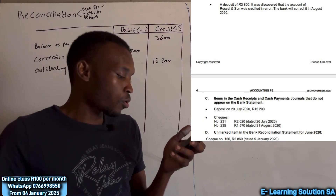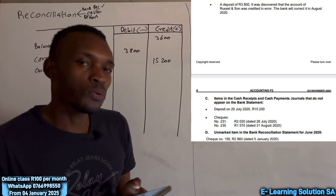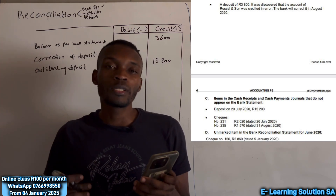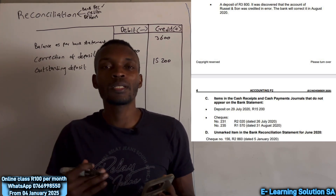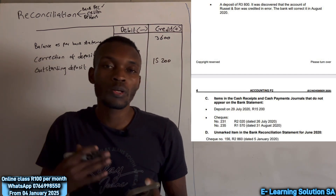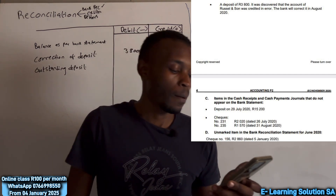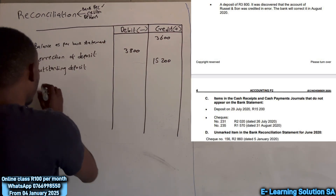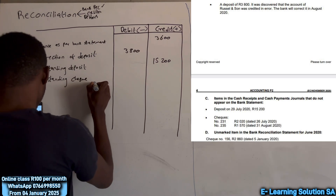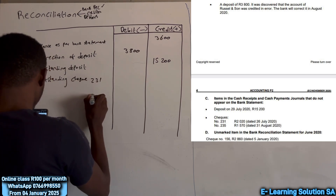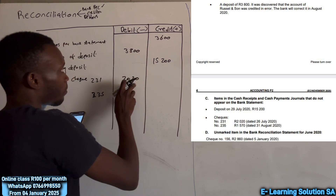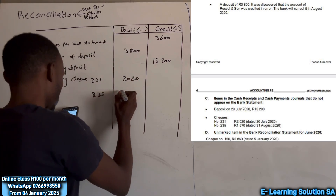Regarding outstanding checks, I want to emphasize the issue of dates. When it comes to outstanding checks that are post-dated, we must record them every month until that date is reached, as long as the check is not older than six months. If it is older than six months we cancel it. We have two outstanding checks: check number 231 for 2,020 and check number 235 for 1,570.